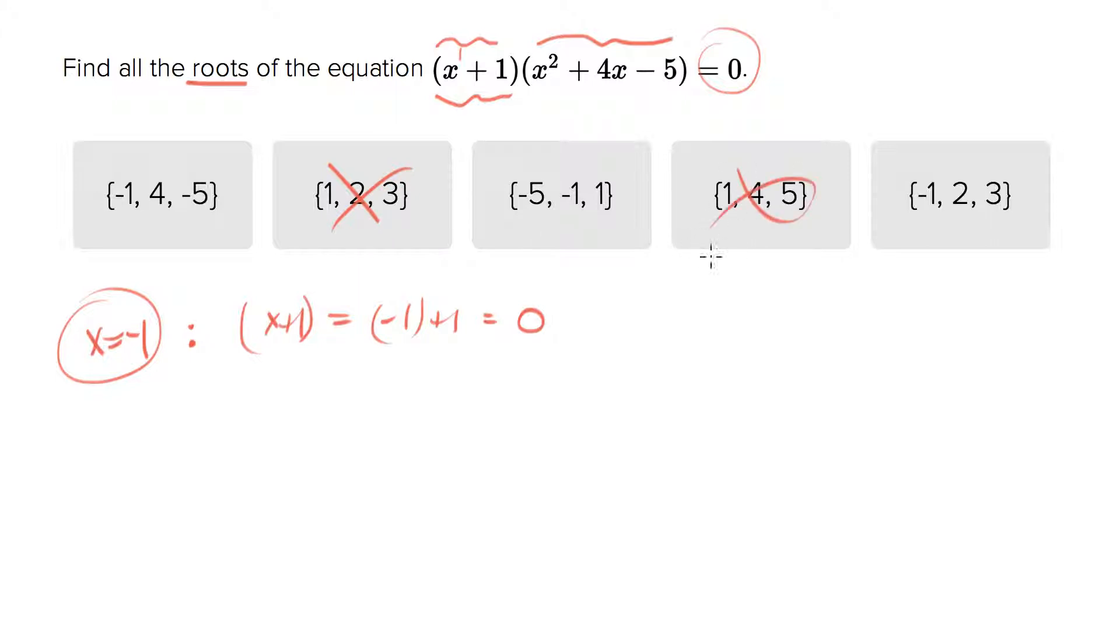We can get rid of anything that doesn't have that negative one right away. Now you can ignore that x plus one part of it because we've already found the number that makes that zero. What we need to do now is look at the quadratic and say is there anything that makes this zero?